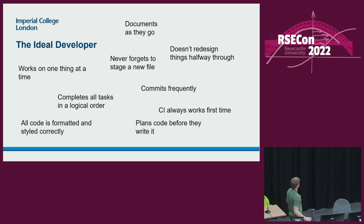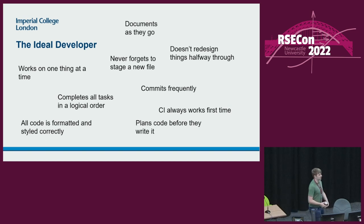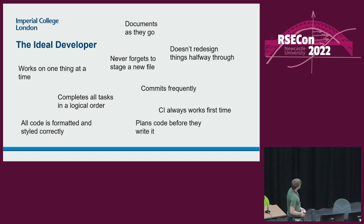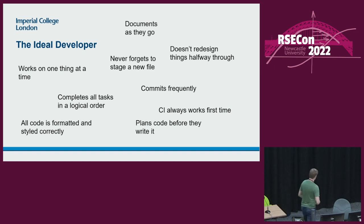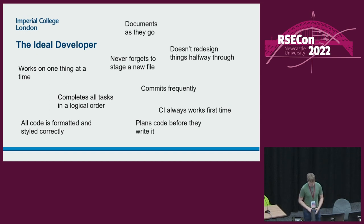So maybe the conclusion from that is we're all bad at our jobs, but probably not, right? There's quite a few of us in here. Probably some of us are good at our jobs. So we can probably conclude instead that maybe the ideal developer does not exist. Maybe ideal developer is a bit of a fiction. Maybe we should worry not so much about being the ideal developer.